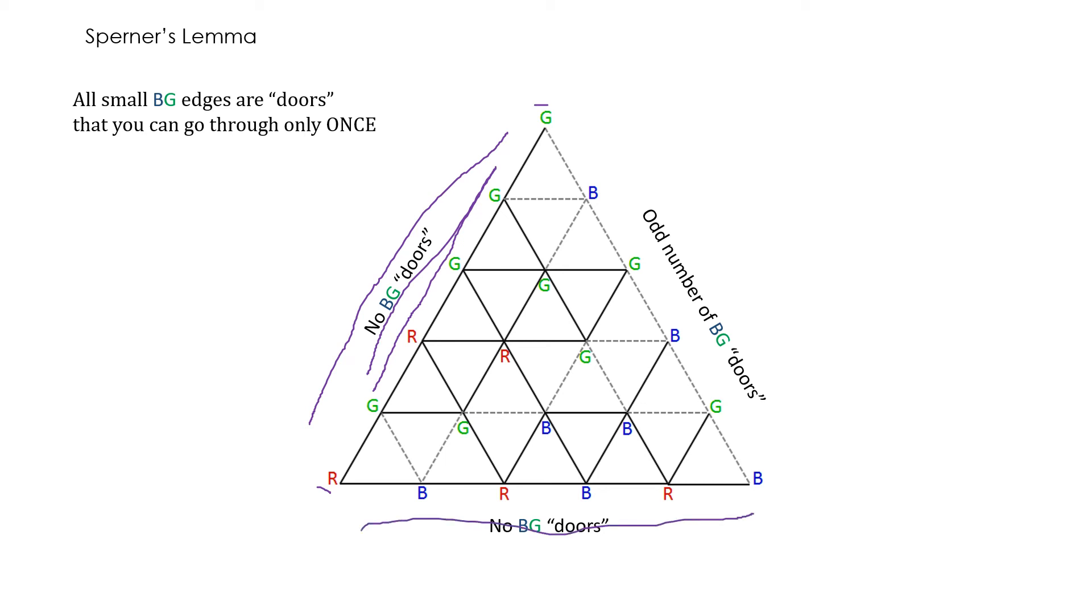Likewise, along this edge, all the inside vertices are labeled either B or R. So there are no G or green vertices here. In other words, we don't have any BG doors here either. But on this edge, we have an odd number of BG edges.